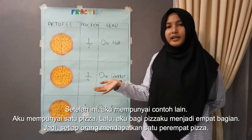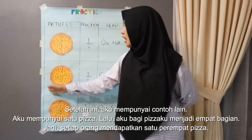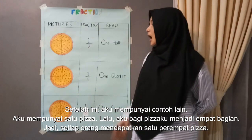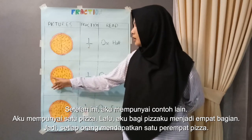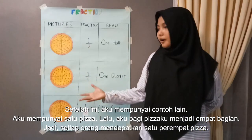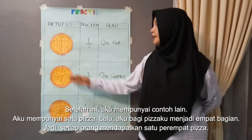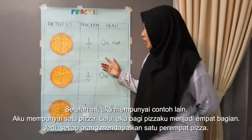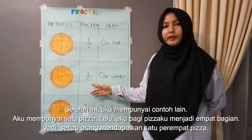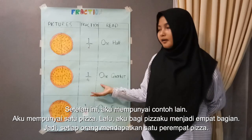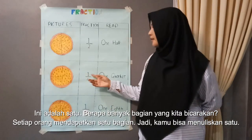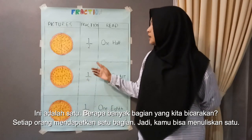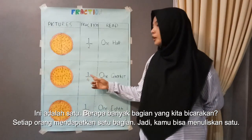I have another example. I have one whole pizza. After that, I divide my pizza into four. Each person gets one quarter of the pizza. This is one — how many parts we are talking about. Each person gets one. So you can write one.